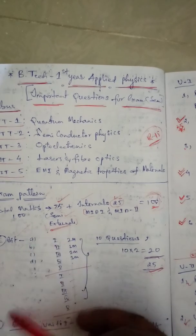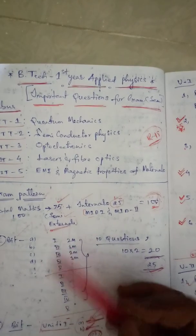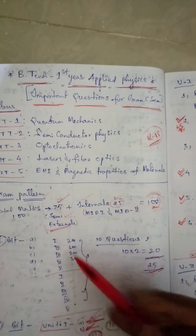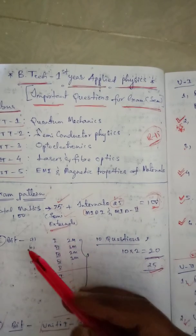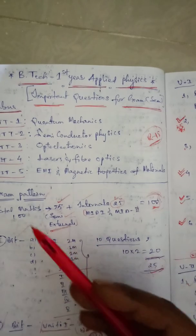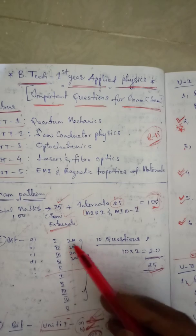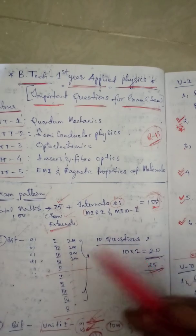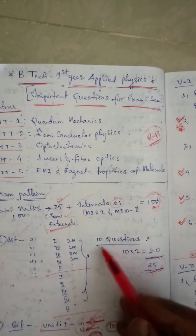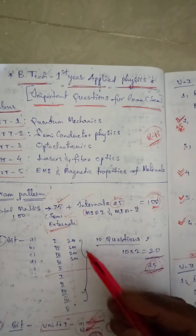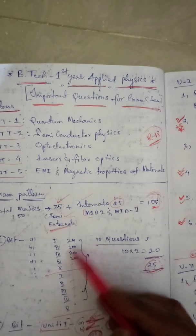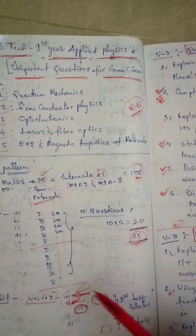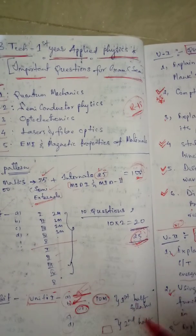In the question paper there is a first bit and second bit. In the first bit, ten questions will be asked in the form of A, B, C, D, E, F, G, H, I — ten questions total. Two questions will be asked from every unit, and there are five units, so five times two equals ten questions. Each question carries two or three marks depending on the content. The total marks in the first bit are 25 marks.